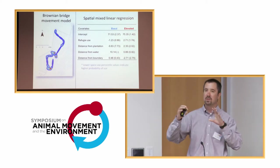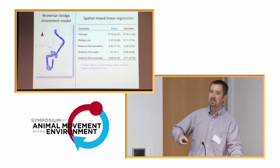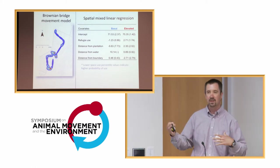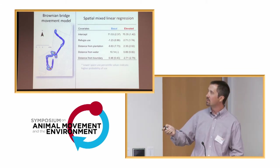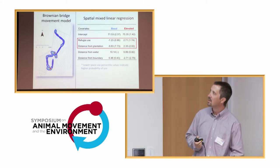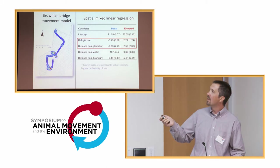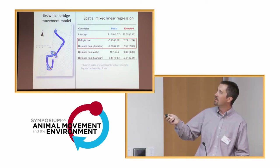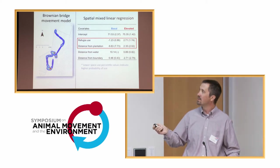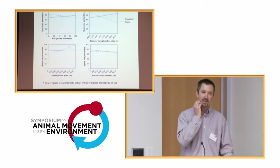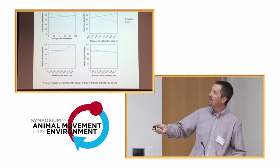Here you can see in the Brownian bridge movement model here on the left, these areas in red are areas of high use along their movement path, blue, low use. And so we were able to, when we had those partitioned out by basal and elevated physiological states, we fit some spatial mixed linear models. We looked at a bunch of different extrinsic factors, like refugia use - where were those areas where they were finding refugia from our earlier investigation? Distance to plantations, distance to water, distance to boundary. All those external factors we knew influenced elephant movement. And we found some pretty stark results, contrasts here, particularly with refugia use and distance from plantations. When they're in their basal physiological states versus elevated, they had quite different coefficient values.